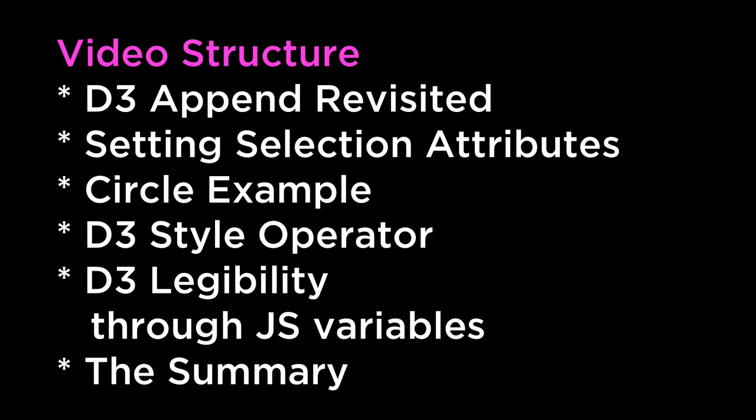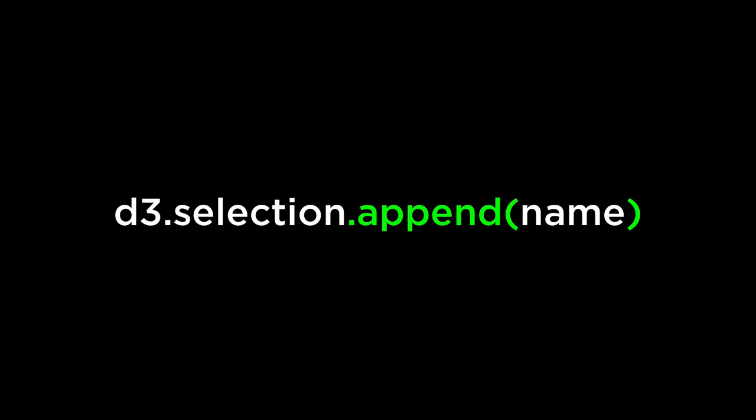Let's get started with D3 Append Revisited. The D3 append operator appends a new element with the specified name as the last child of each element in the current selection. It then returns a new selection containing the appended elements. In addition to appending HTML elements, one can also append SVG elements.